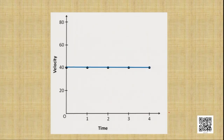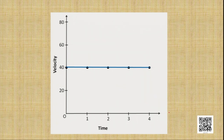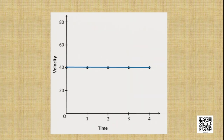So how does the velocity of that object change with respect to time? We will represent it on a graph. For the first graph, when the object is moving with uniform velocity, let us assume the object is moving at a velocity of 40 meters per second. At the first second, the velocity is 40 meters per second, and after another second at the third second, the velocity also remains the same — 40 meters per second.